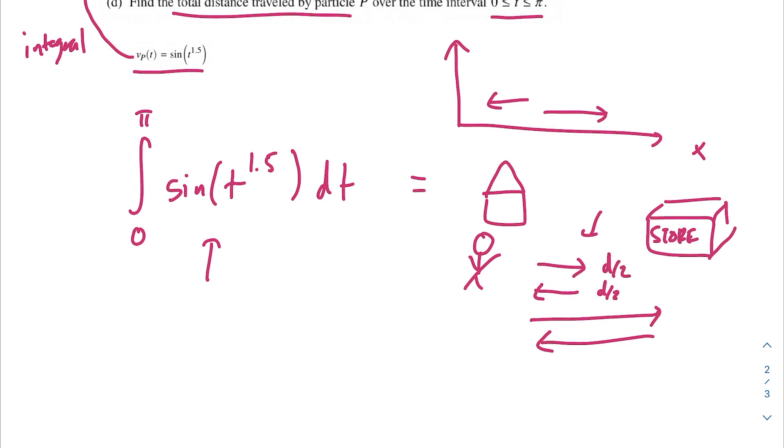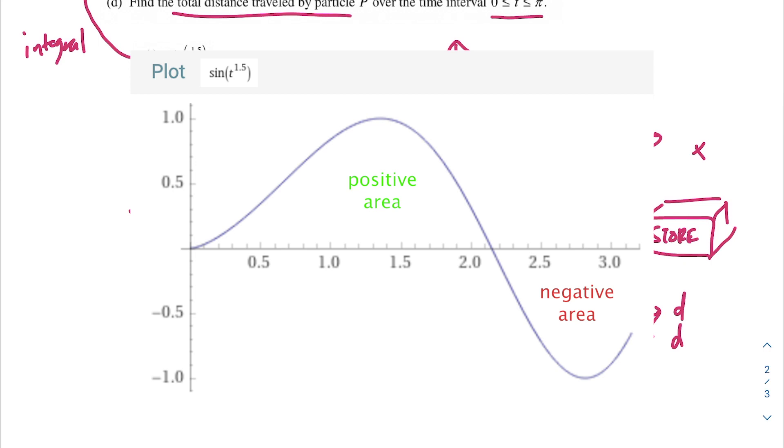What actually is going to happen is we're going to count this as some distance, let's call it d divided by 2, d divided by 2, and then this is d and d. We're going to add all that up. And so the same is true here, where we're actually going to want to take the absolute value of sine of t to the 1.5 power, and then take the integral of that to get our total distance. Because otherwise, the area under the curve that's below the x-axis of sine of t to the 1.5 power is going to subtract from our area above the x-axis.